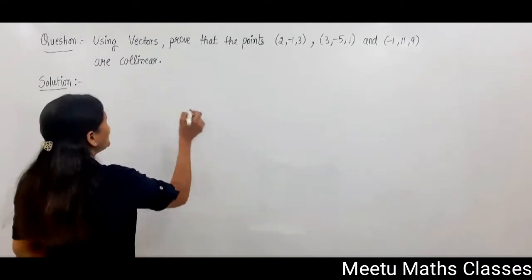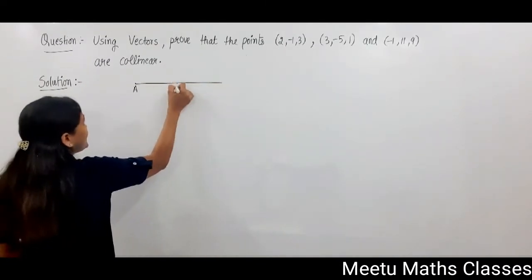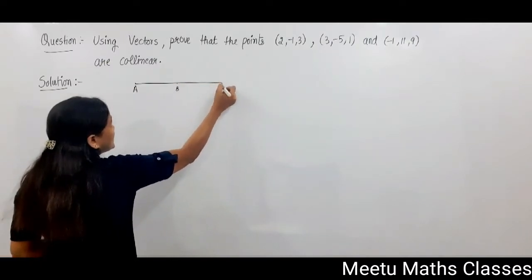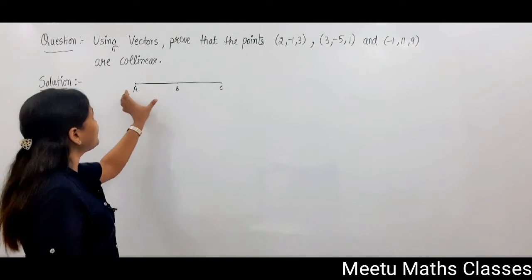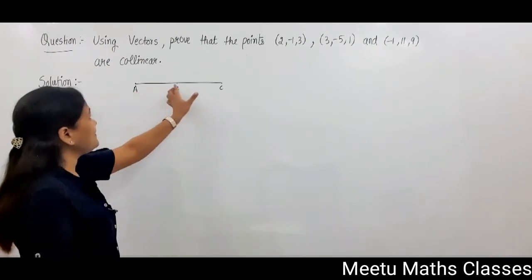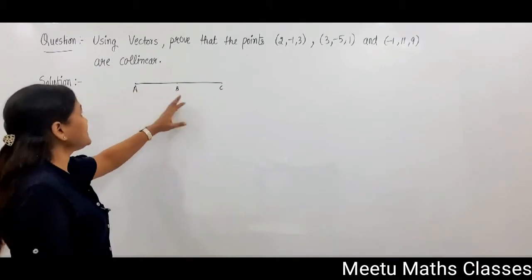Now to prove three points are collinear, suppose A, B and C. These three points are collinear. We need to prove that the sum of the lengths of AB plus BC is equals to AC. The names can be anything.